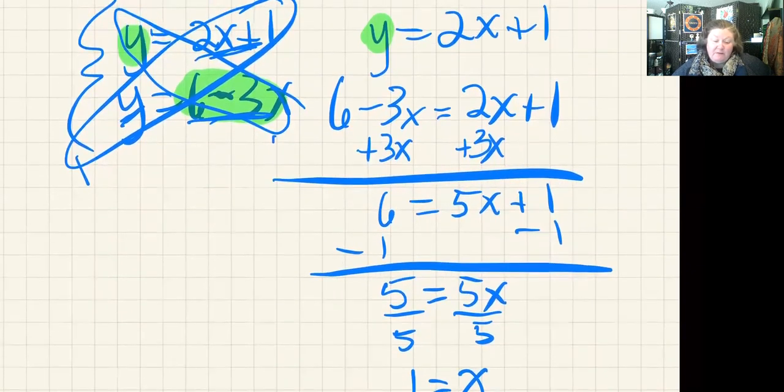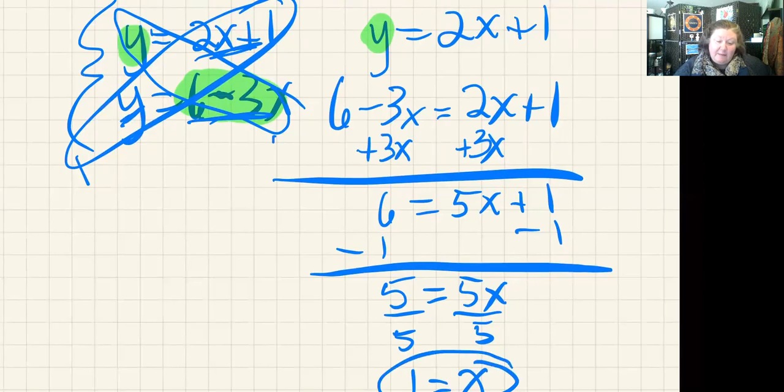Now I can go back to either one of the initial equations. I've written them very messily over here on the left. I can take this x = 1 and substitute it in for x in either equation. I'm going to use this equation here.